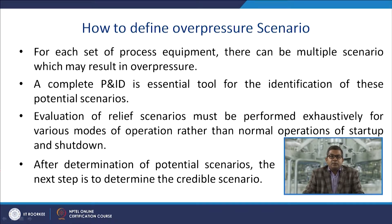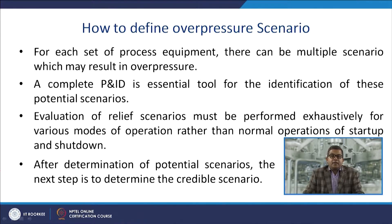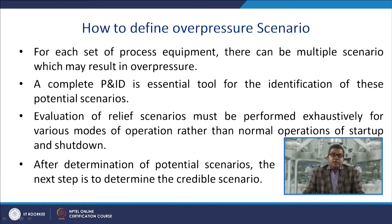For each set of process equipment there can be multiple scenarios resulting in various kinds of overpressure — sometimes due to process requirements and sometimes due to certain failures. A complete P&ID diagram is an essential tool for identifying these potential scenarios and must be evaluated exhaustively for various modes of operation, including startup and shutdown.